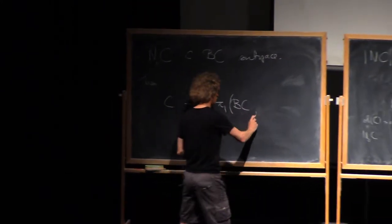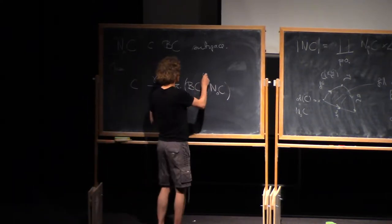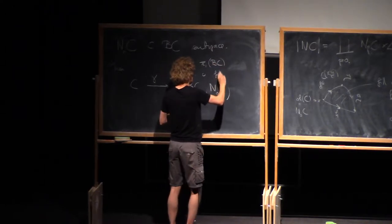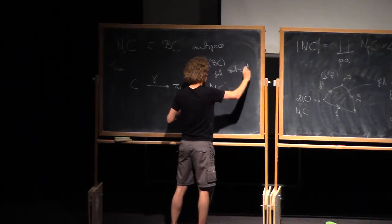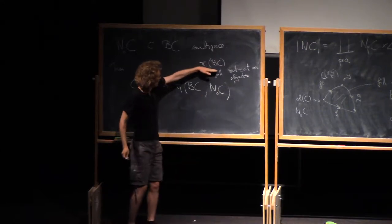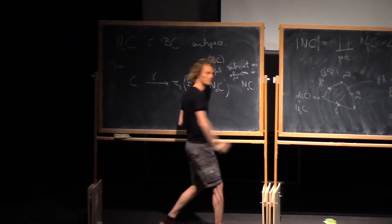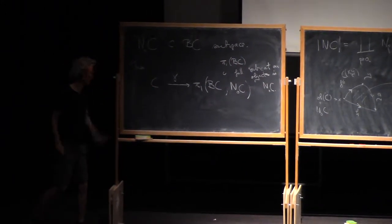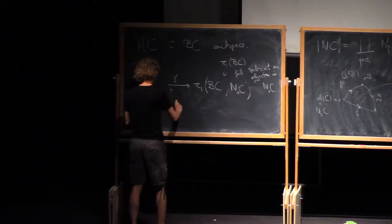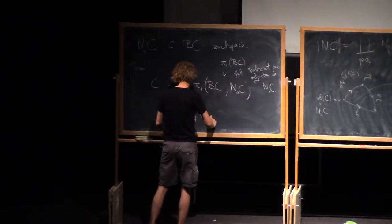In the notes, I wrote this as π₁(BC, N₀C). This just means the full subcategory of the fundamental groupoid on objects — full subcategory on objects — where objects are points and I only take the points in N₀C. It lands there by definition, and the same proposition shows that this will be an isomorphism of categories if C is a groupoid.